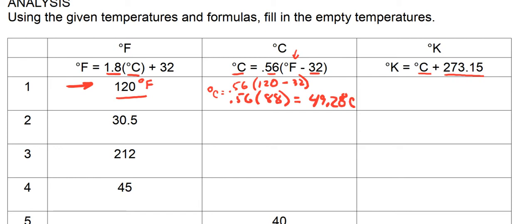So now we know that 49.28 degrees Centigrade equals 120 degrees Fahrenheit. Unfortunately, that is going to be the temperature in some places in the world this summer — pretty dang hot. Not quite hot enough to fry an egg, but still hot enough to make your feet uncomfortable.